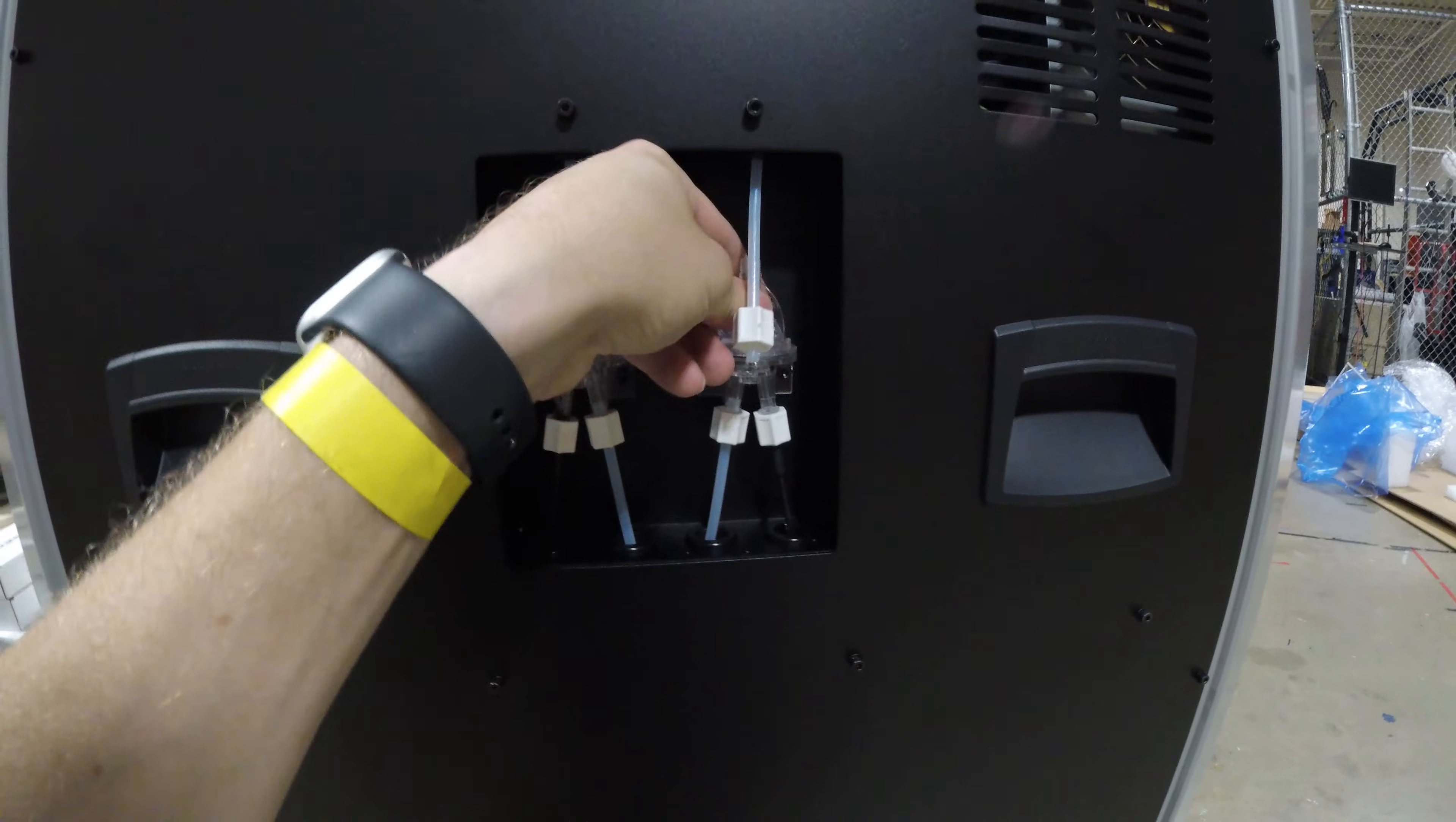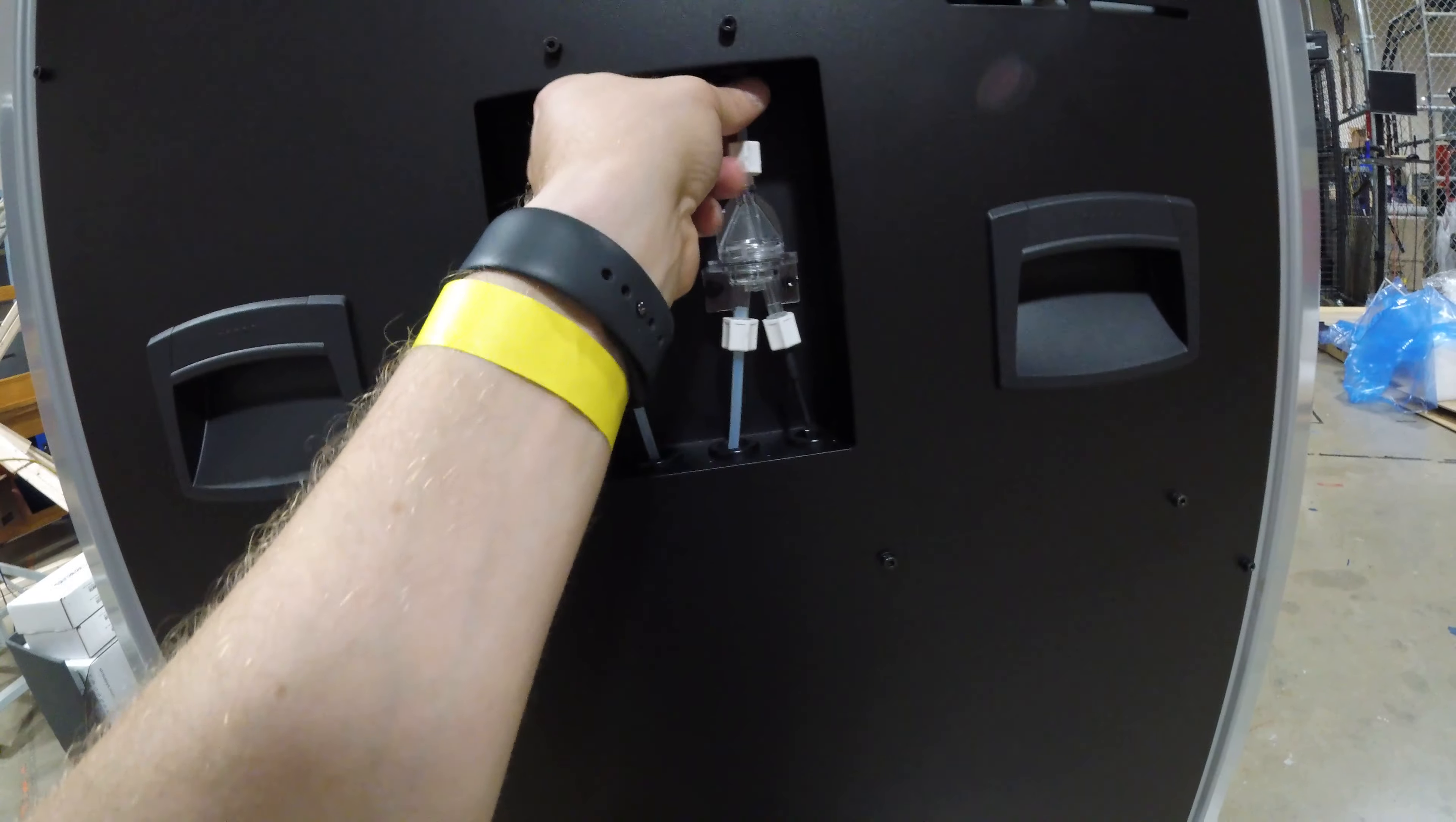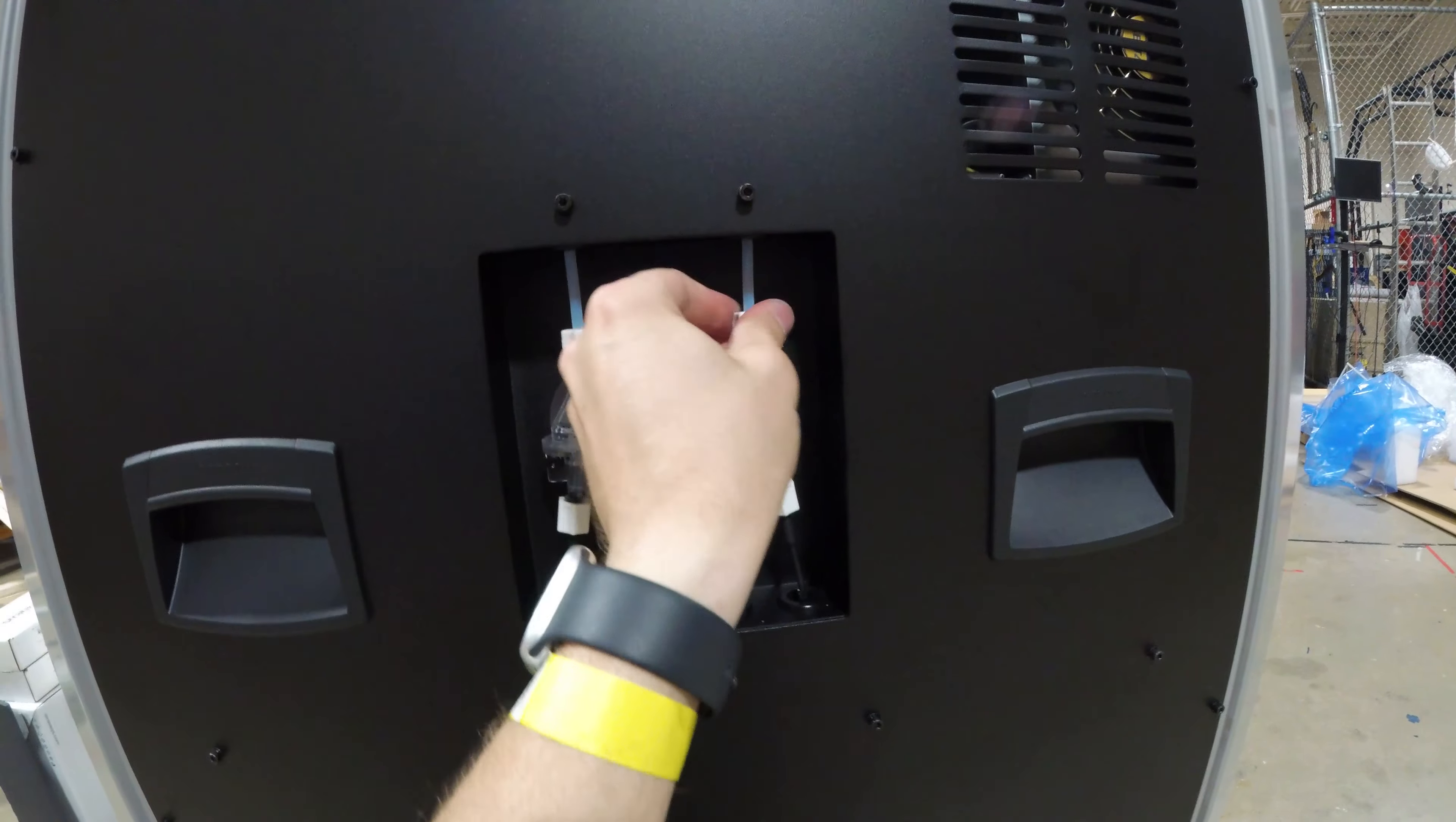And then this tube, we want to make sure it's inserted and seated properly because if that's not all the way down in there, then we might have some trouble. And then we're just going to twist this back on. So we can see the tube is inserted fully in there and this is on tight.